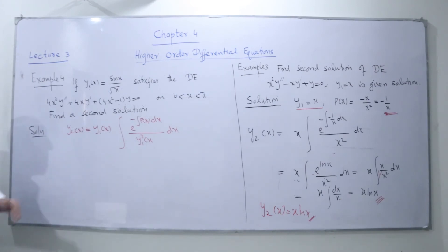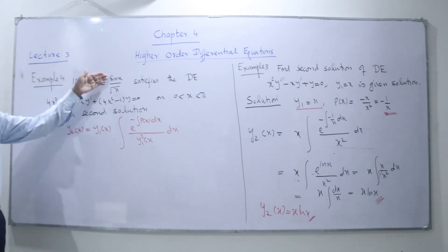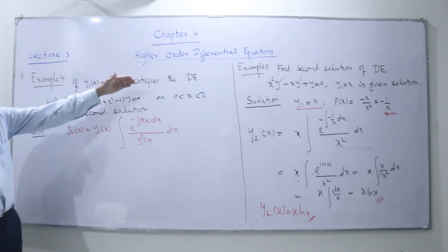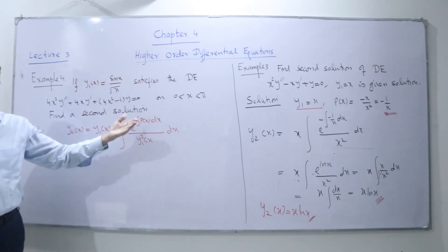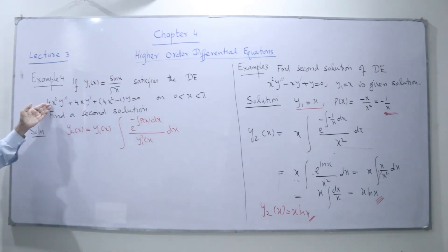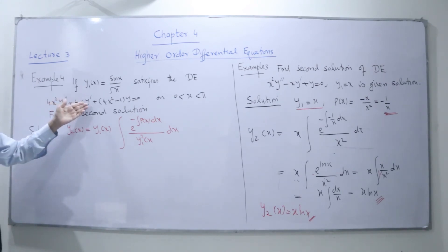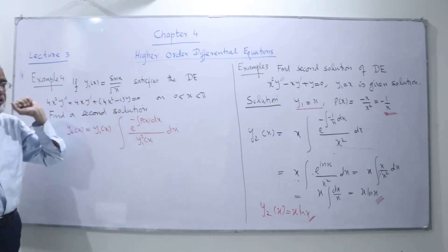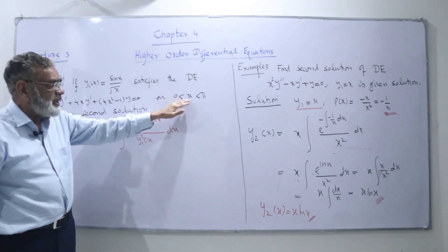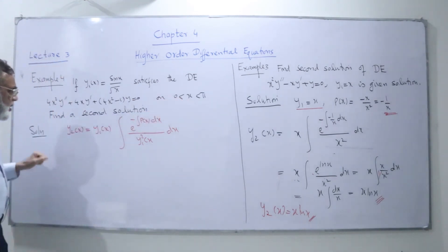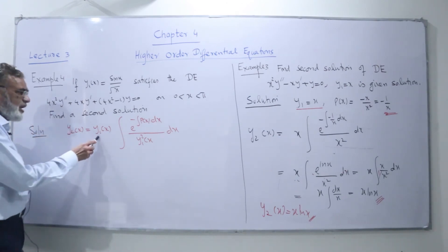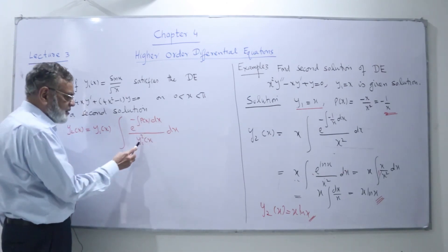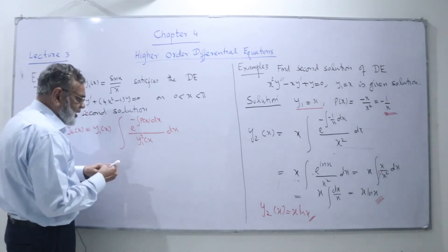In Example 4, we are given the solution y1(x) = sin(x) over root of x, which satisfies the differential equation 4x²y'' + 4xy' + (4x² − 1)y = 0 on the interval 0 to π. We want to find the second solution y2 using the formula: y2(x) = y1(x) times the integral of e to the power of minus the integral of p(x) dx, over y1²(x), dx.